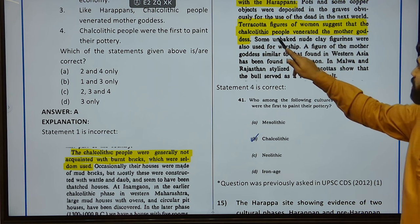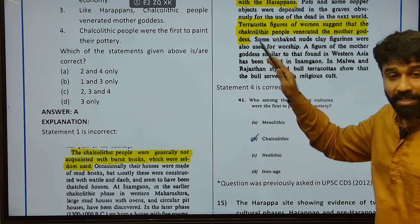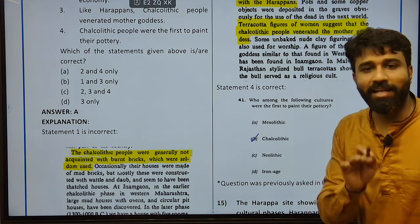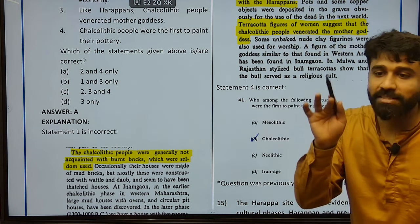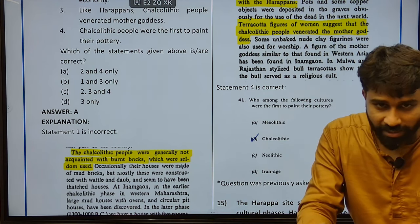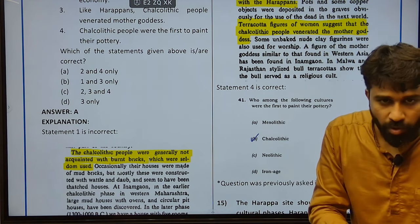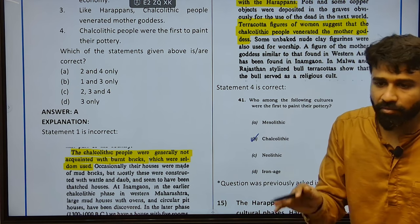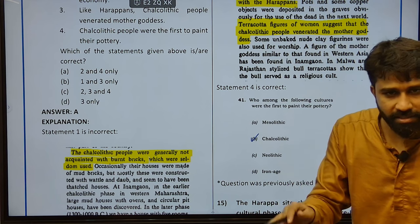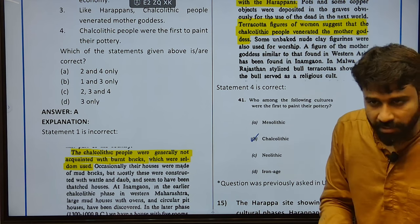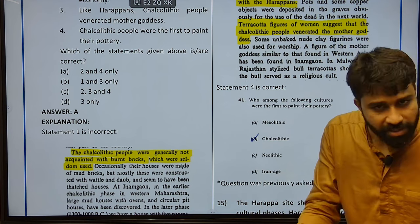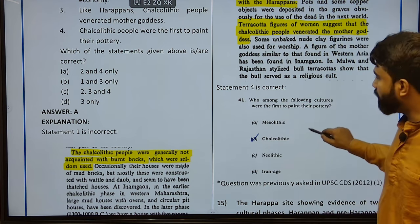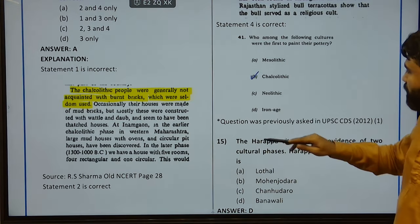Terracotta figures of women suggest that Chalcolithic people venerated the Mother Goddess. Chalcolithic people venerated Mother Goddess and they followed village culture — mostly Jorwe culture, settled communities who followed agriculture and also cultivated wheat, barley, rice, and domesticated animals. This Jorwe culture was named after the village located beside Pravara, a tributary of Godavari. The fourth statement was a PYQ — asked in UPSC CDS in 2012.